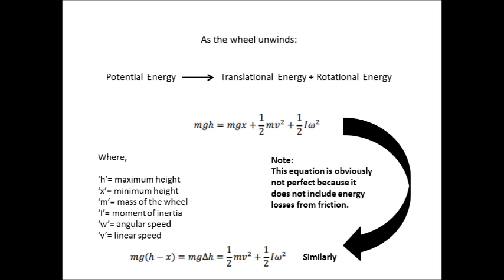As the wheel unwinds, the potential energy stored in it is converted into translational energy and rotational energy. We can write an equation for the various components of energy, where h equals maximum height, x equals minimum height, m equals mass of the wheel, i equals moment of inertia, omega equals angular speed, and v equals linear speed.